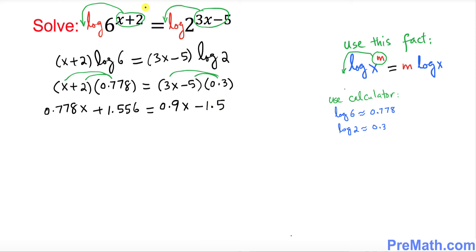The next thing we want to do is put x's on one side and the constant on the other to solve for x. So let's subtract 0.778x from both sides, which gives us 1.556 equals 0.122x minus 1.5.